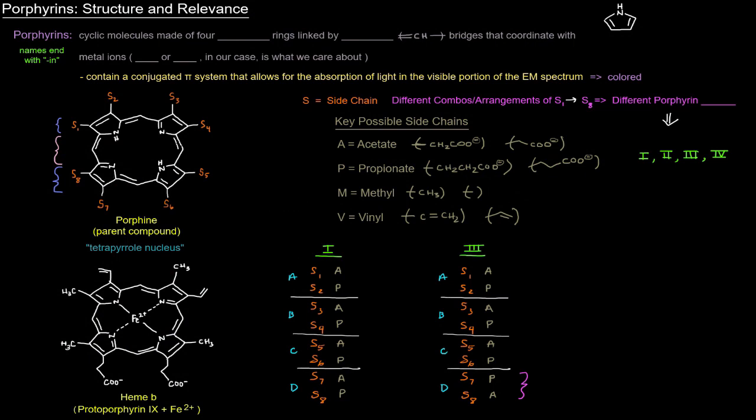In this video, I want to talk about porphyrins — specifically their structure and relevance to heme metabolism and to the porphyrias. This video is going to get a little detailed, more than what will matter as far as Step 1 goes, but I think some of these details help really solidify an understanding when it comes to heme, its structure, and its importance and metabolism as it relates to the porphyrias.